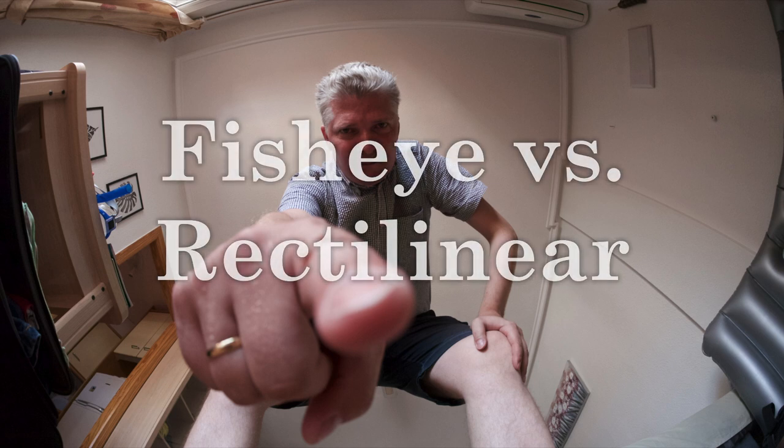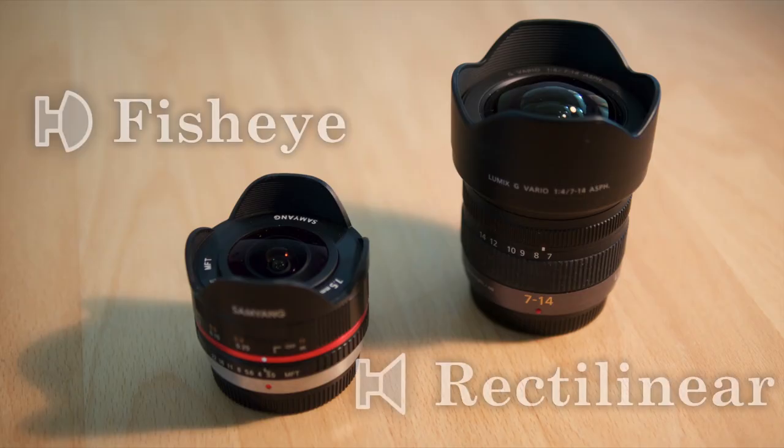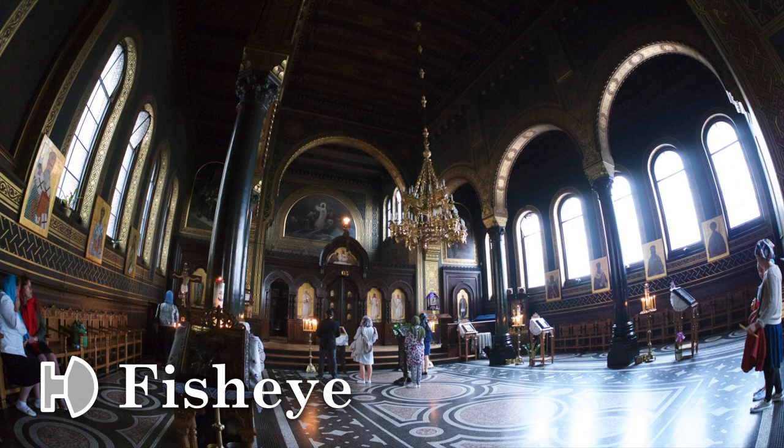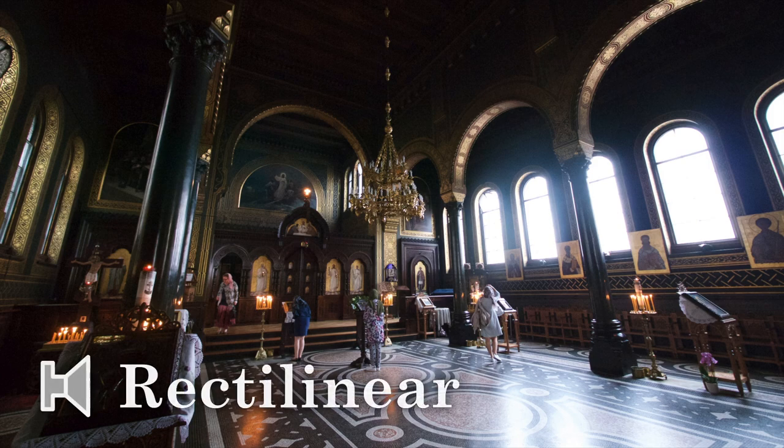Wide-angle photographic lenses come in two flavors: fisheye lenses and rectilinear lenses, which are just normal wide-angle lenses. What is the difference between the two?